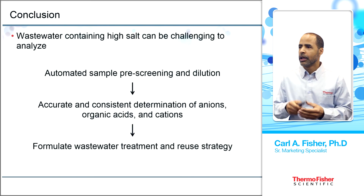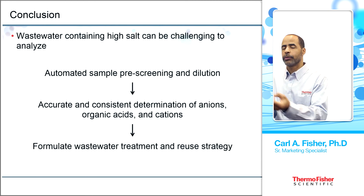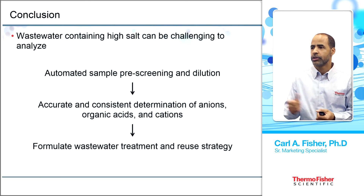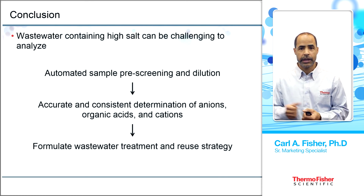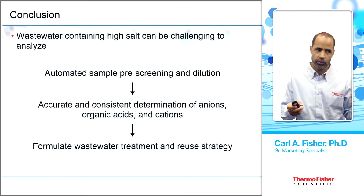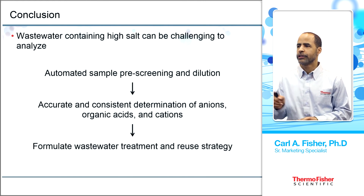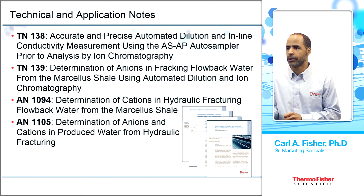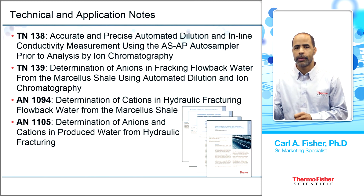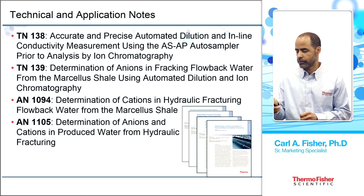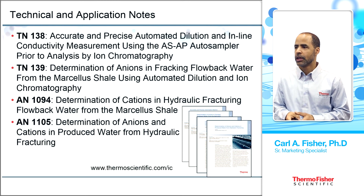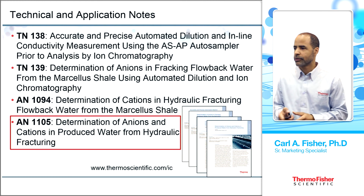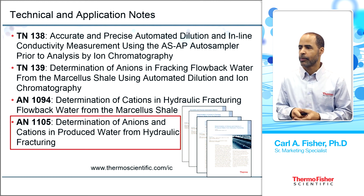To conclude: wastewater contains a lot of salt, but you can overcome this challenge by automating it. You can do it manually or automate it with pre-screening and dilution, and in this way you can get accurate, consistent results for anions, organic acids, and cations. This can help you formulate a wastewater strategy and reuse policy. There are a number of technical notes available: Technical Note 138 talks about automated dilution using the ASAP autosampler; Technical Note 139 looks at fracking flowback; Application Note 1105 covers produced water; and Application Note 1094 covers cations in fracturing flowback. For additional information about all IC innovations, you can go to thermoscientific.com/IC.